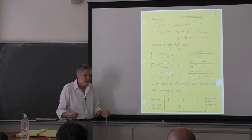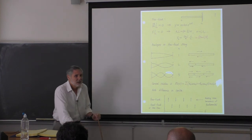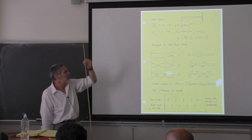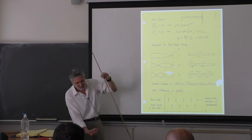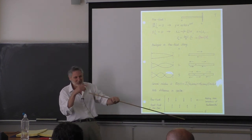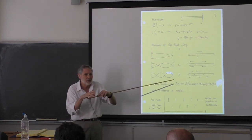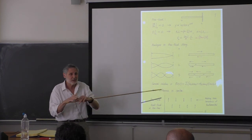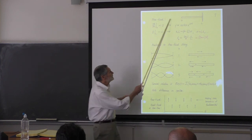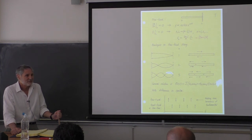This is utilized in organ pipes — people stumbled onto this empirically hundreds of years ago. If you want really low frequency from an organ pipe in a cathedral, you can save yourself the trouble of a very long pipe by cutting it in half and blocking the end. The open end acts like a free end; blocking the other end gives you mixed boundary conditions and halves the fundamental frequency.